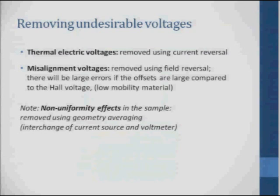So the thermoelectric voltage we remove using current reversals, the misalignment voltage is removed using field reversals, but there will be large errors if the offset is large compared to the Hall voltage. And there also can be non-uniformity effects in the sample, and they can be removed by doing what's called geometry averaging, where you interchange the current meter and source meter. And I'm not going to talk about that type of averaging anymore in this talk.